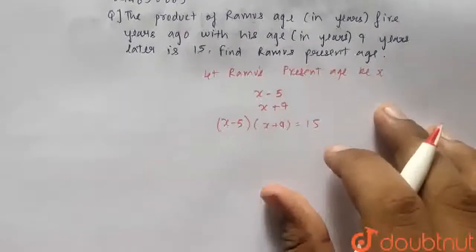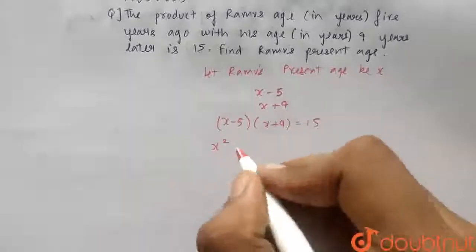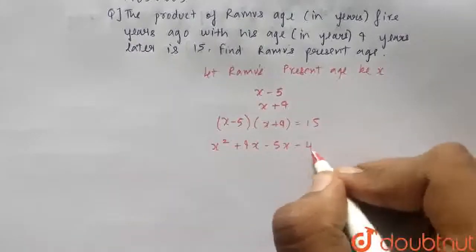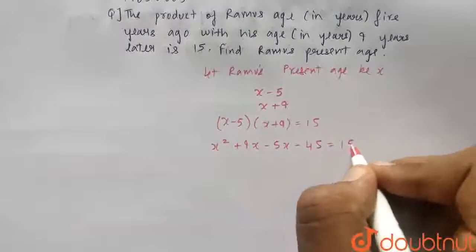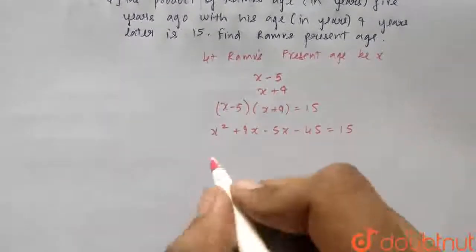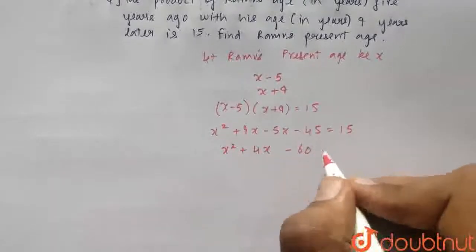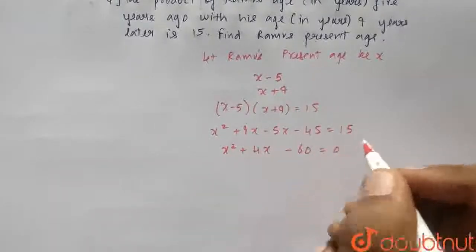Now, I will just open it. This is a quadratic equation which we have to solve. So it is x² + 9x - 5x - 45 = 15. So now we have x² + 4x - 60 = 0.